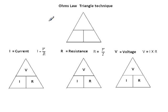The triangle technique can be used to find the missing variable in Ohm's law. Remembering, Ohm's law is current equals voltage divided by resistance.